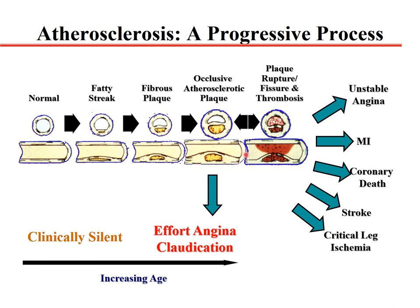Later on, or maybe earlier, when we have a ruptured plaque — the plaque that is very slowly growing is the stable plaque. Another plaque that can rupture is the erosive plaque. When the erosive plaque develops, the patient will have unstable angina, myocardial infarction, coronary death, stroke, and critical leg ischemia. These are the very important clinical signs, usually meaning that we have a thrombus adhering to this erosive plaque, which is then liberated and plugs a smaller or bigger artery.